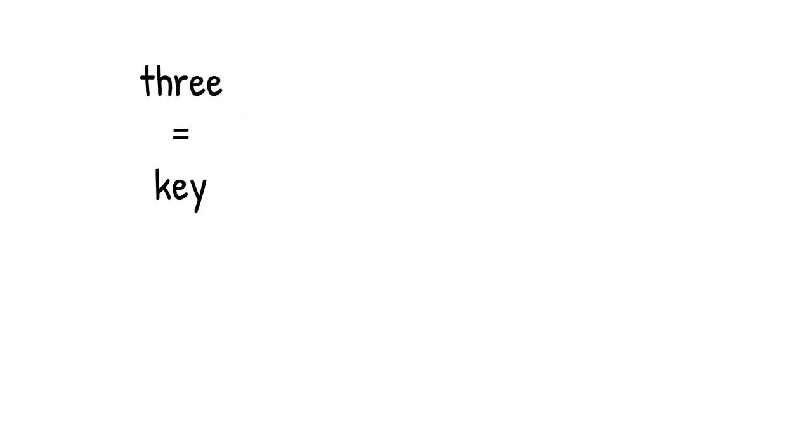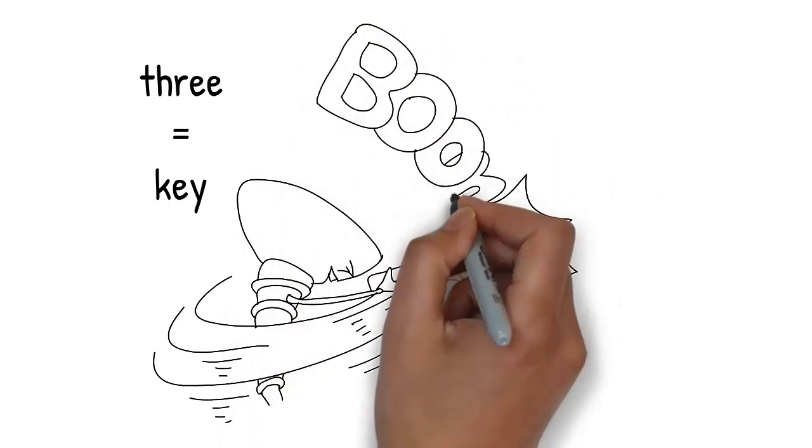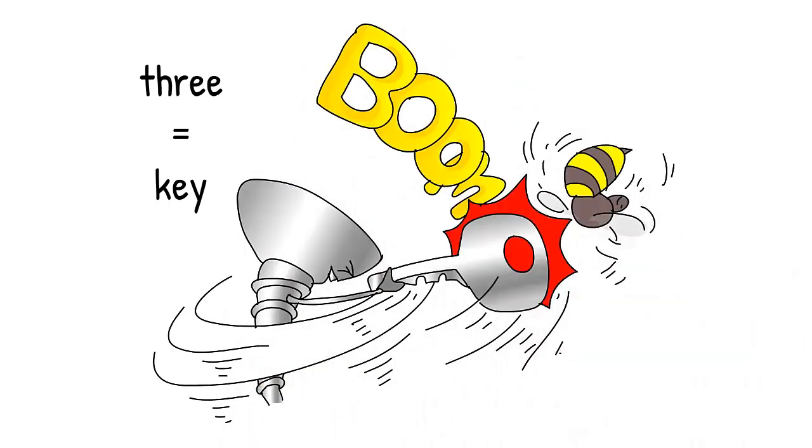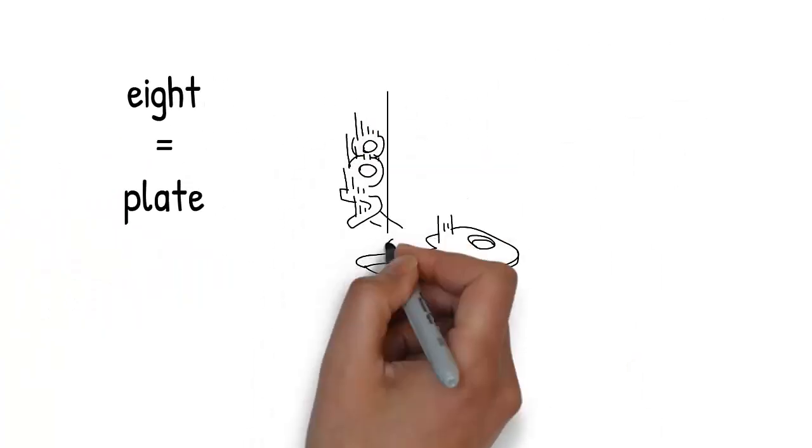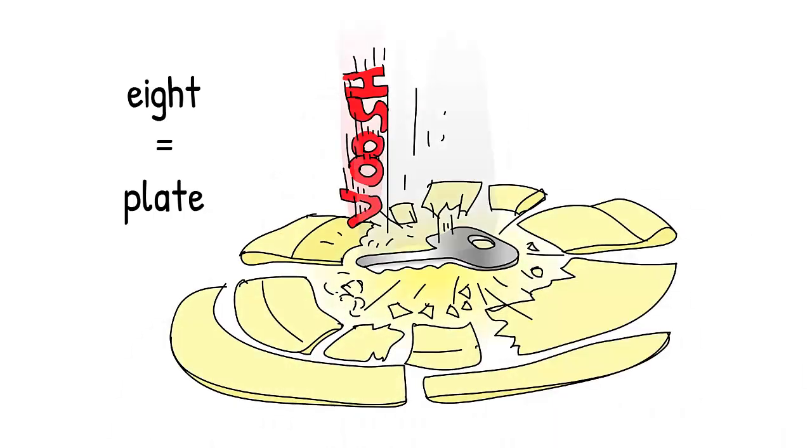After the sudden crash, there's a bit of road rage and the screw pulls out a large key and uses it to hit the bee out of the way. Key makes you think of the number three. The key falls from the hand of the screw and lands on a plate, smashing it into small pieces. Plate rhymes with eight.